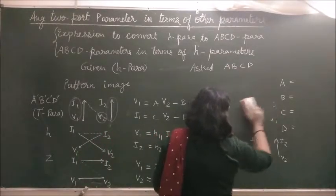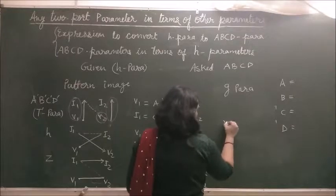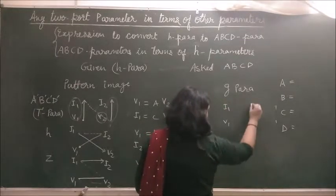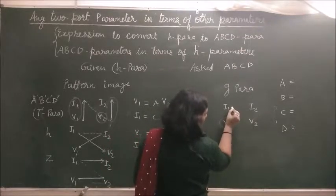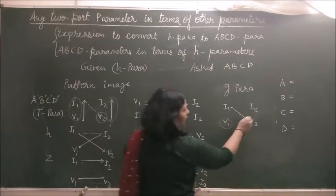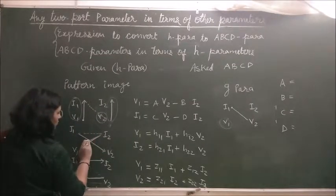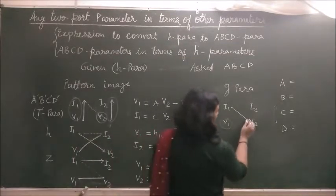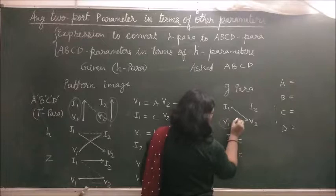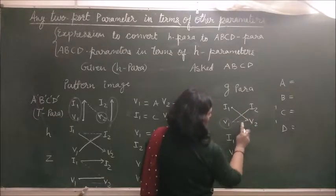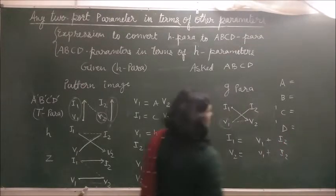Next is the G parameter, which is the inverse of H. For G parameter, we do not start with V1. We start with I1 and move in the cross direction — the same cross direction as H parameter but starting from I1. So I1 and V2 come as left-hand side variables, then V1 and I2 come as first and second term variables respectively.